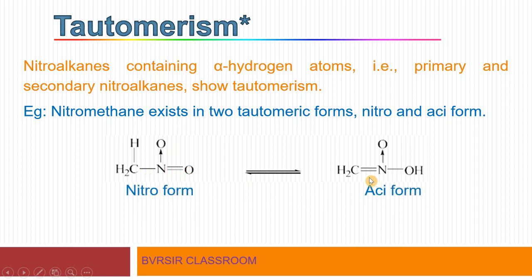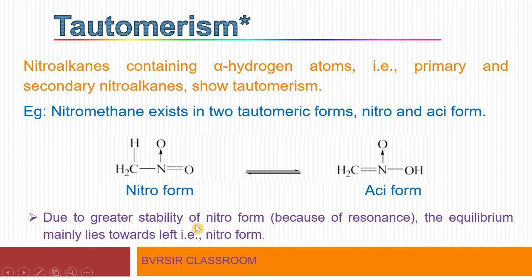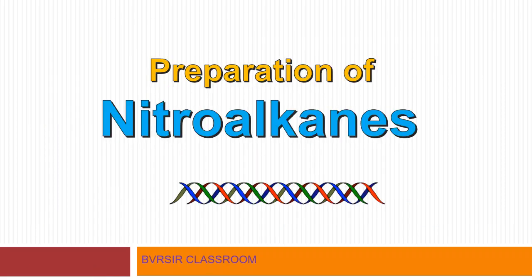In the aci form, the structure is CH2=N(O)OH. The nitro form is represented as CH3NO2, and the aci form has the N–OH group. Due to the greater stability of the nitro form, the equilibrium mainly lies towards the left — meaning the nitro form predominates. The aci form is only relevant when reactions require it, and reactions are explained based on this tautomerism concept.